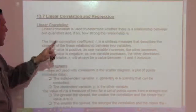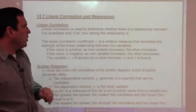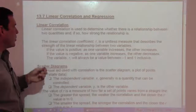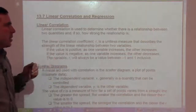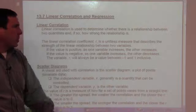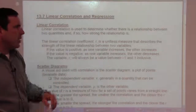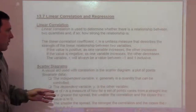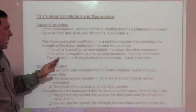Linear correlation is used to determine whether there is a relationship between two quantities, and if so, how strong is that relationship? The linear correlation coefficient, R, is a unitless measure that describes the strength of the linear relationship between two variables.